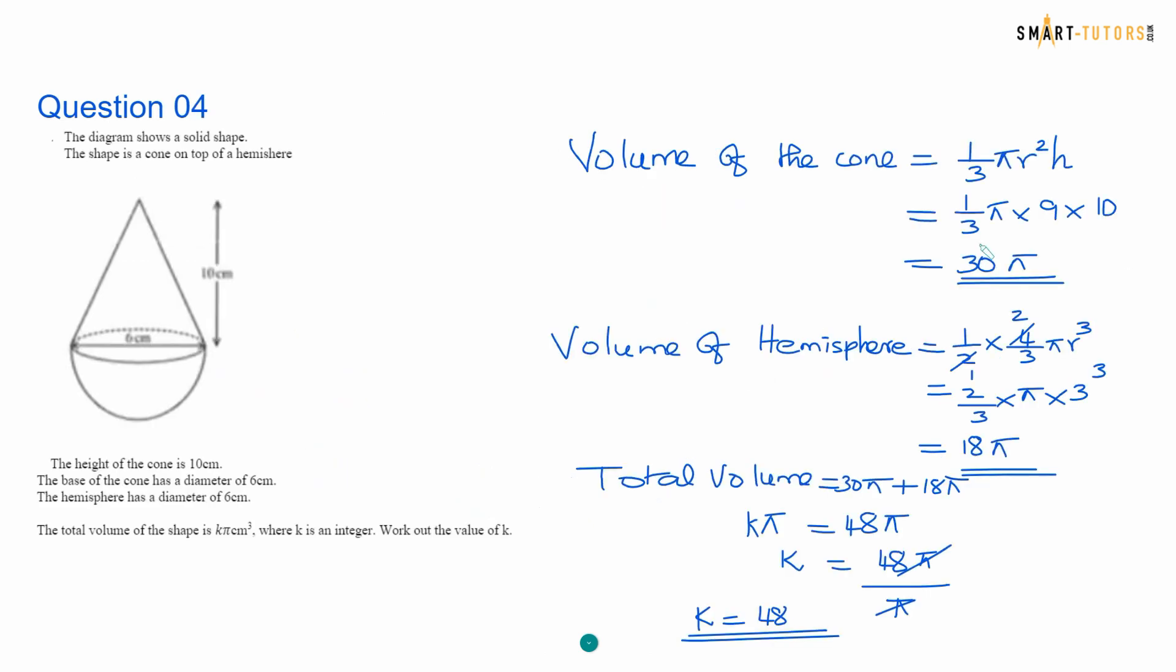Question number 4. A cone and a hemisphere is attached together. Volume of the cone, you can find out 1 third pi r squared h. The formula is given in the exam. 1 third pi times r squared, diameter is given 6 and radius is 3, so 3 squared is 9 times 10, you solve with 30 pi. Volume of the hemisphere, remember to put half times 4 third pi r cubed. If you simplify 18 pi, add them together 48 pi. So k pi equals 48 pi. k equals 48.